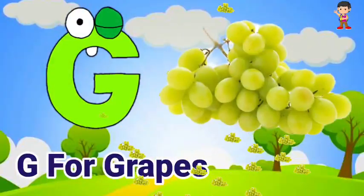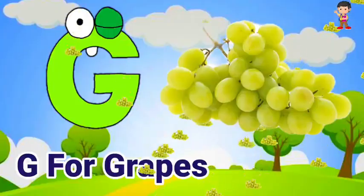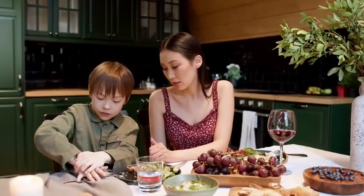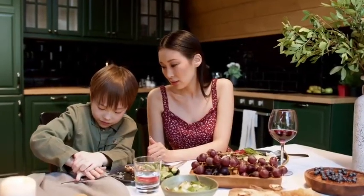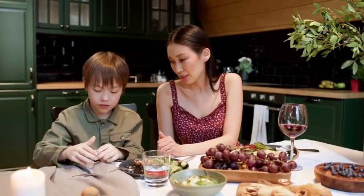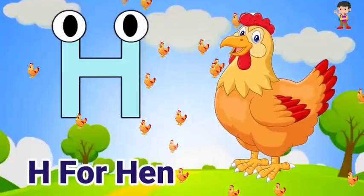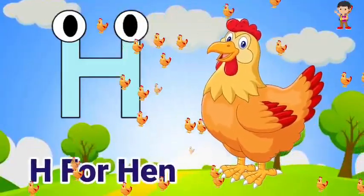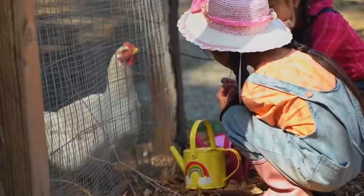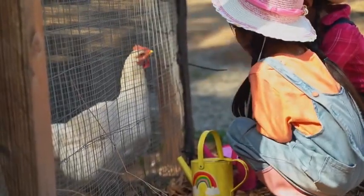G for grapes. Grape means ongoor. H for hair. Hair means murgi.